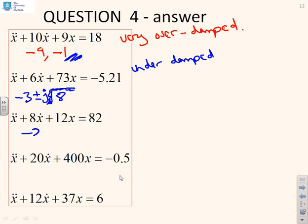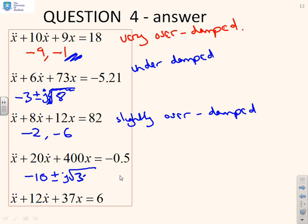What about this next one? You'll see the roots are going to be minus 10, plus or minus j root 300. And for the one down at the bottom, it's going to be minus 6, plus or minus j1.